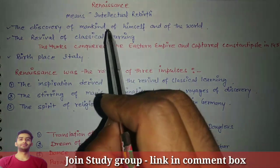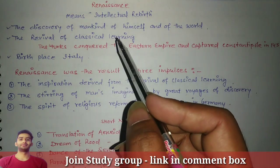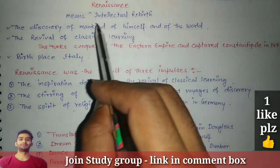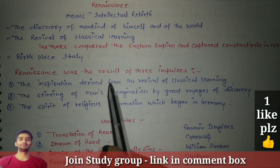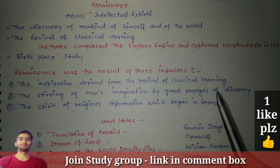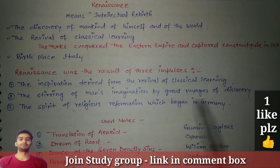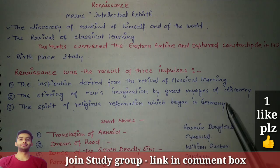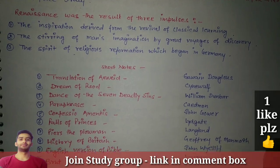So, what was the Renaissance? Let's go through this again in a short introduction. Renaissance means intellectual rebirth, and it was the result of three impulses: the inspiration derived from revival of classical learning, the stirring of men's imagination by great voyages of discovery, and the spirit of religious reformation which began in Germany — we talked about this in detail in the previous video.